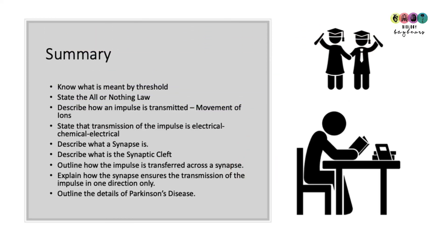So at the end of this video, know what is meant by threshold. State the all or nothing law. Describe how an impulse is transmitted, state it's the movement of ions. State that the transmission of the impulse is electrical, chemical, electrical. Describe what a synapse is. Describe what is the synaptic cleft. Outline how the impulse is transferred across a synapse. Explain how the synapse ensures the transmission of the impulse in one direction only. And outline the details of Parkinson's disease. Best of luck. The only way to revise this is to write notes and do exam questions.